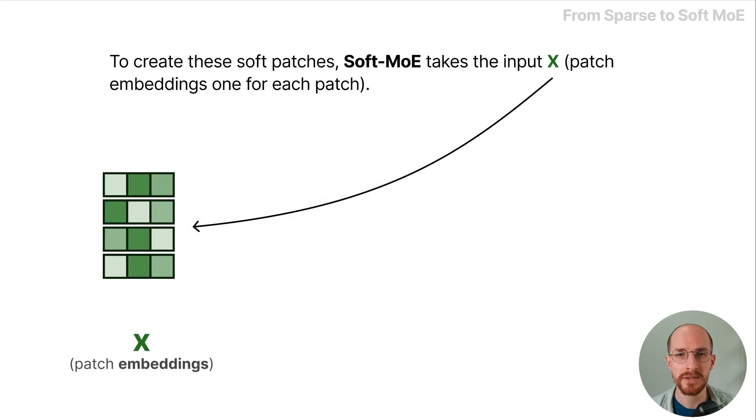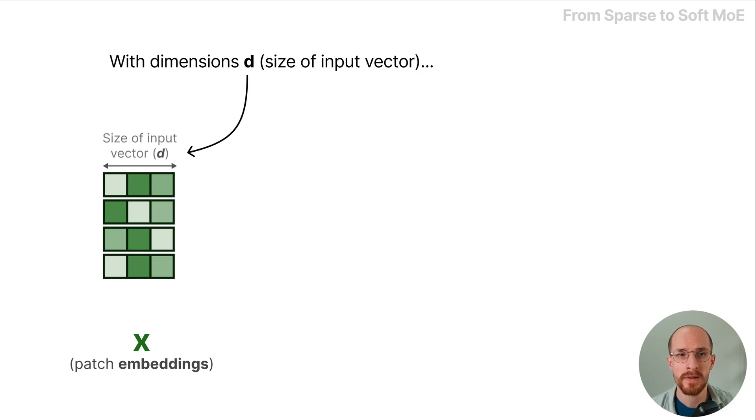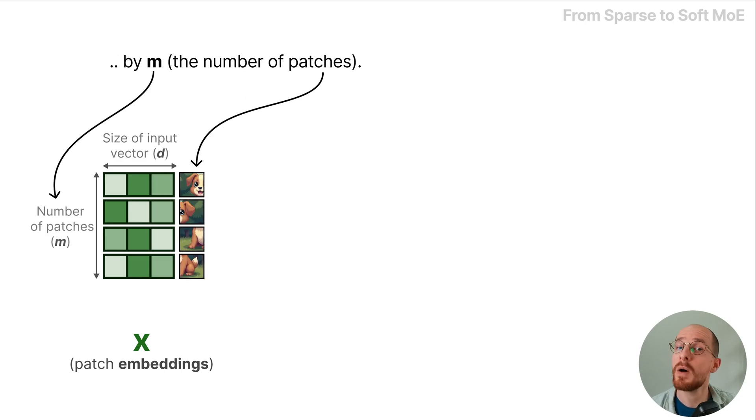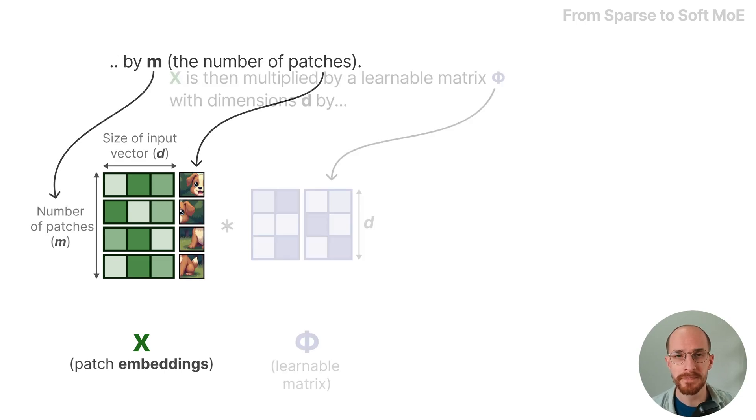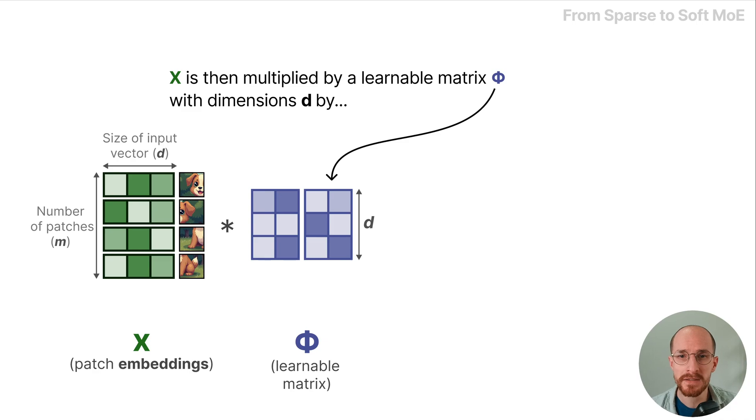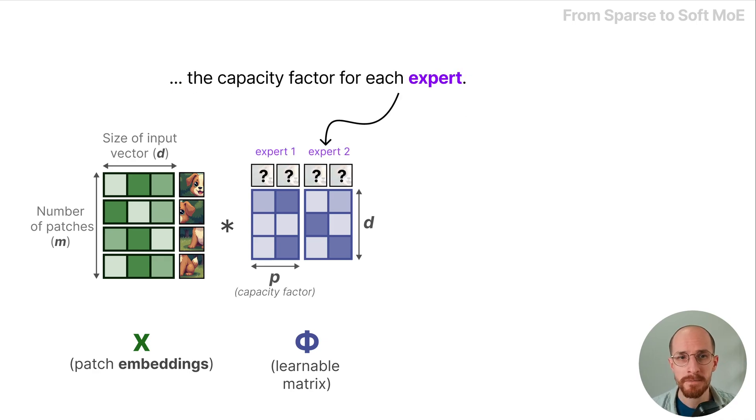To create these soft patches, Soft MoE takes the input X, patch embeddings for each patch with dimensions D, so the size of the input vector by M, the number of patches. X is then multiplied by a learnable matrix phi with dimensions D by the capacity for each expert.